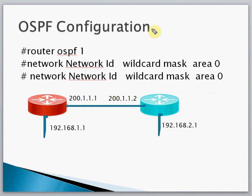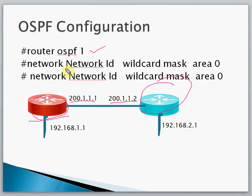For example, with Router 1 and Router 2 having addresses 200.1.1.1 and 200.1.1.2, the configuration commands are: first write 'router ospf 1', then 'network', followed by the network ID, the wildcard mask, and 'area 0'. We have an area concept in OSPF which we will discuss in coming videos — for now we are only covering area 0.